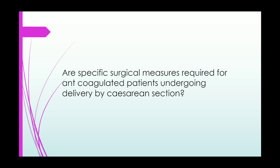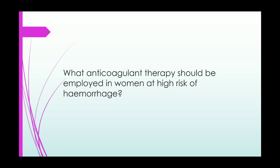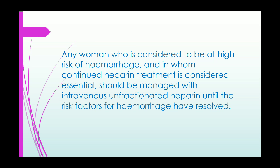For anticoagulated patients undergoing caesarean section, wound drains (abdominal and rectus sheath) should be considered, and skin incision should be closed with interrupted sutures to allow drainage of any haematoma. Women at high risk of haemorrhage in whom heparin therapy is essential should be managed with intravenous unfractionated heparin until the haemorrhage risk factors are resolved.